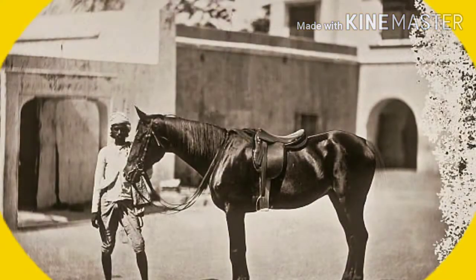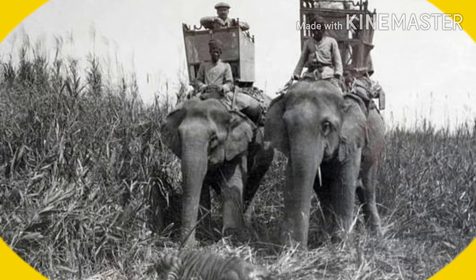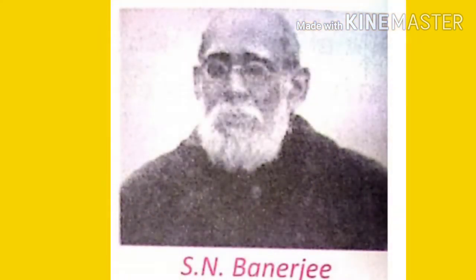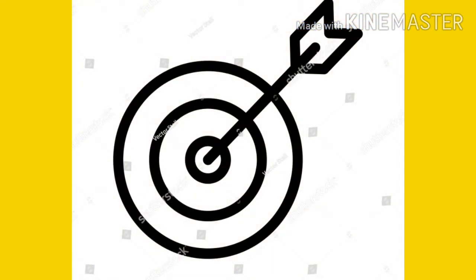Congress in its annual sessions demanded that Indians should be allowed to manage their own affairs. The most important early leaders of the Congress were Dadabhai Naoroji, S.N. Banerjee, G. Subramaniya Iyer, Gopal Krishna Gokhale, and Badruddin Tyabji. Their main goal was to win Swaraj, or self-rule.